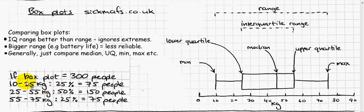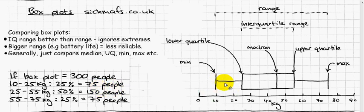If you have a box plot representing 300 people, then looking at this one, the 10 to 25 kilogram range represents 25% of the people, because the data is split into quarters. That means 75 people are represented there, because that's a quarter of 300. And the interquartile range — from 22 to 55 — represents 50% of people, because that's two quarters, which is 150 people.